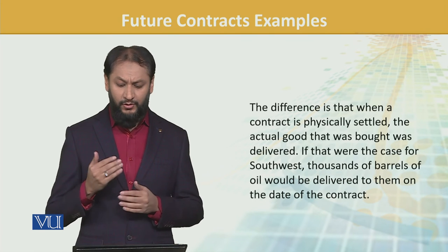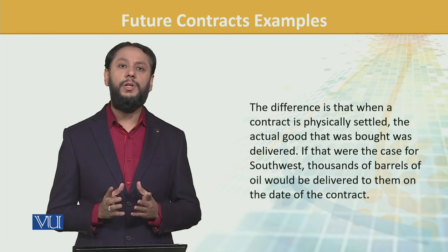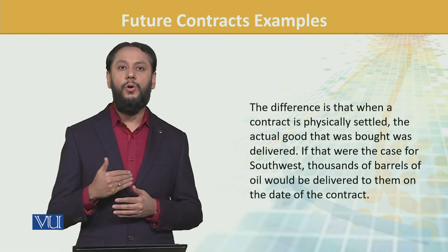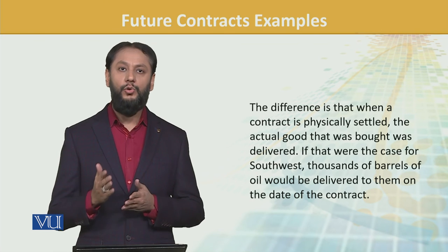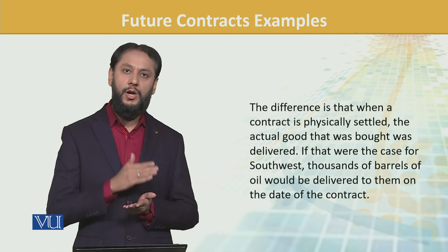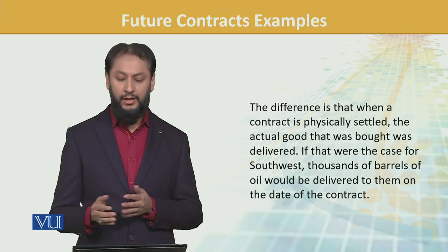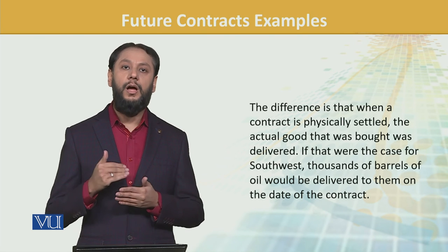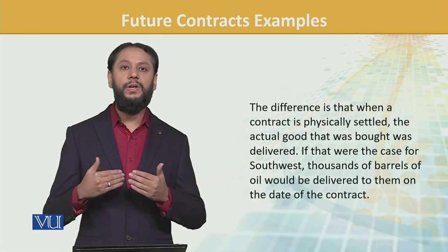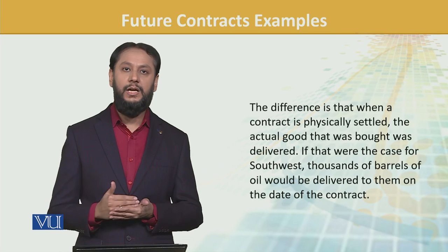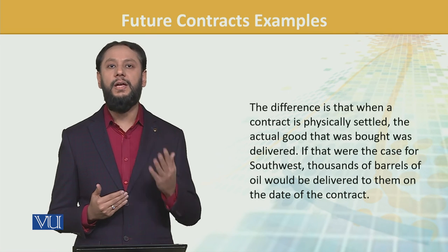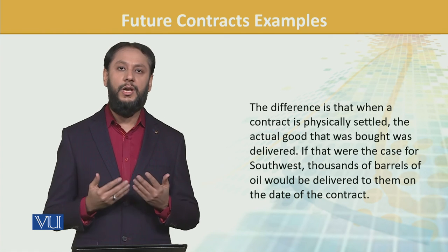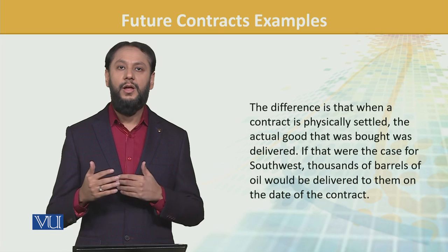The difference is that when a contract is physically settled, actual delivery takes place. When it is cash settled, you will get the differential, or they can buy from the spot market. Both methods are used — physical settlement and cash settlement are both actually used.